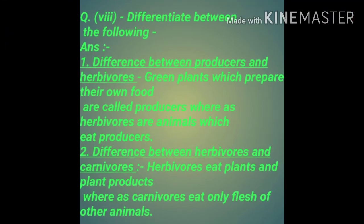Next question — Differentiate between the following. 1st — Difference between producer and herbivores: Green plants which prepare their own food are called producers, whereas herbivores are animals which eat producers. 2nd — Difference between herbivores and carnivores: Animals that eat plants and plant products are called herbivores, whereas carnivores eat only the flesh of other animals.